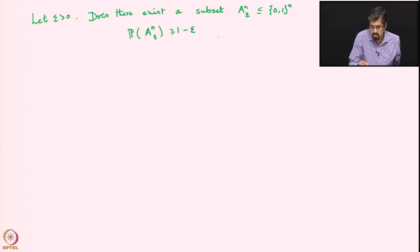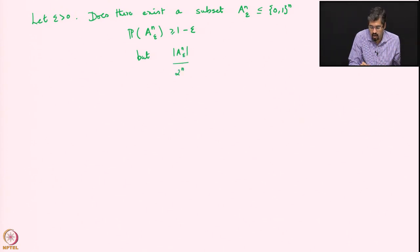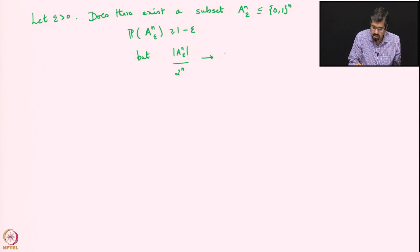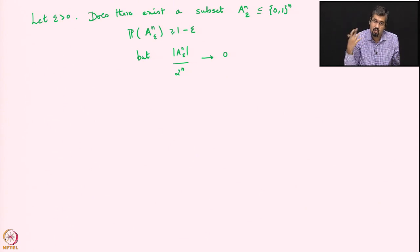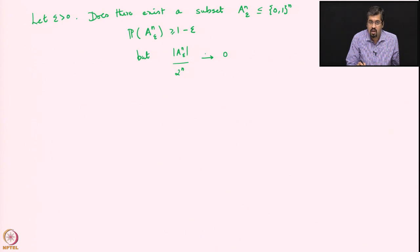We want this subset to be of high probability, but at the same time it should have the property that its cardinality divided by 2^n — that fraction — goes to 0. So does there exist a subset whose probability is large, but whose cardinality as a fraction of the total number of strings is vanishingly small? As n goes to infinity, we want the probability to approach 1 and this fraction to go down to 0.